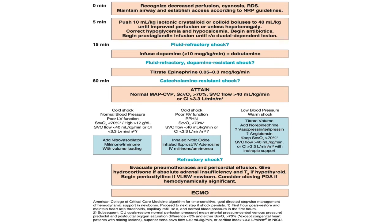We monitor the patient, and if there is still no response and the condition further deteriorates, we assign it as catecholamine-resistant shock. At this point, we divide the shock into warm shock or cold shock. In cold shock, peripheral vasoconstriction occurs, so we can give a vasodilator like milrinone. In warm shock, we give vasoconstrictors or peripheral SVR-improving drugs like terlipressin, vasopressin, or norepinephrine. If still no improvement occurs, we ascertain it as refractory shock and can give hydrocortisone.